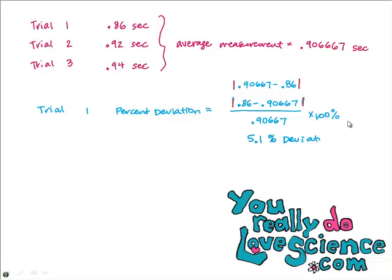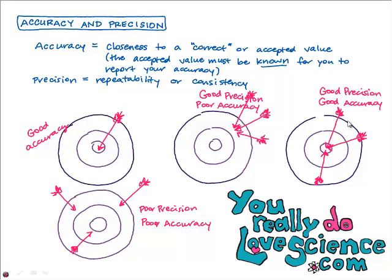Can you see how percent deviation reports how far off each measurement was from the average measurement? That's a good report on your consistency — on how consistent your results were. I hope this helps you understand accuracy and precision a little bit more. One final definition to add: precision is also how close the measurements are to each other — not necessarily to the accepted value or the right answer, but how close the measurements are to each other. Hopefully you understand accuracy and precision better now, and I hope you do well on your next quiz or test.